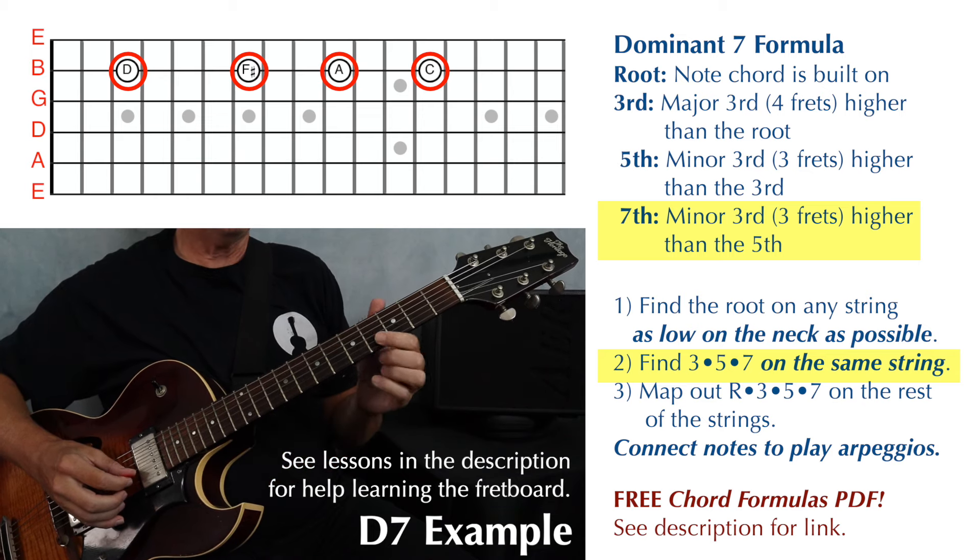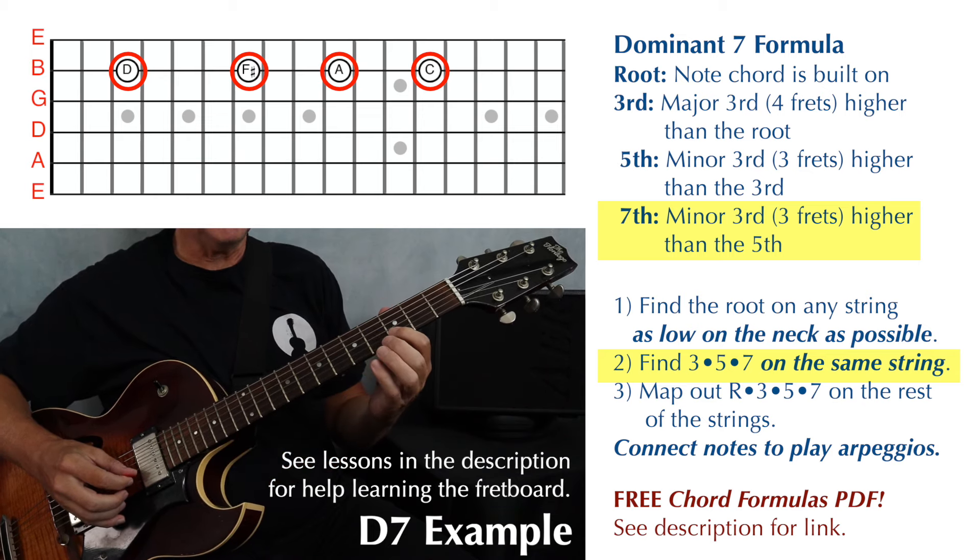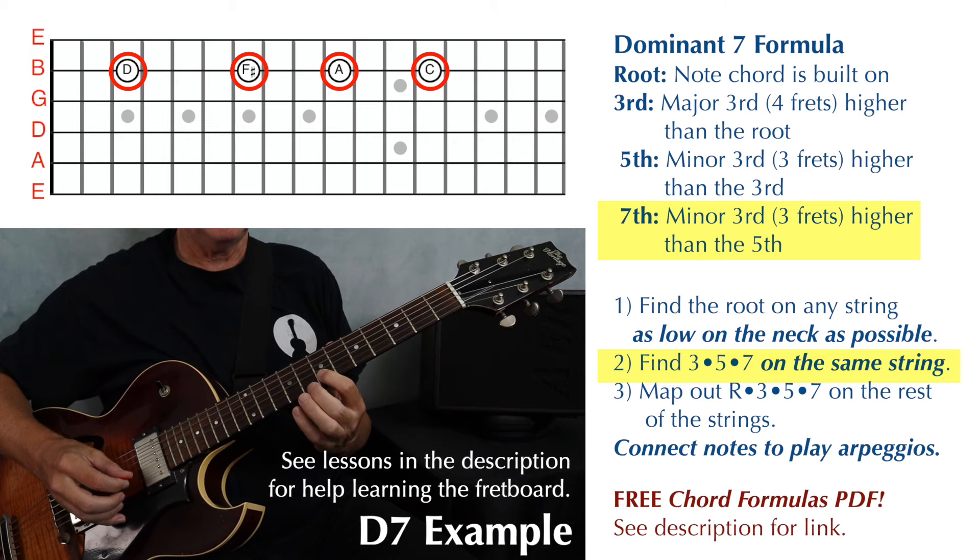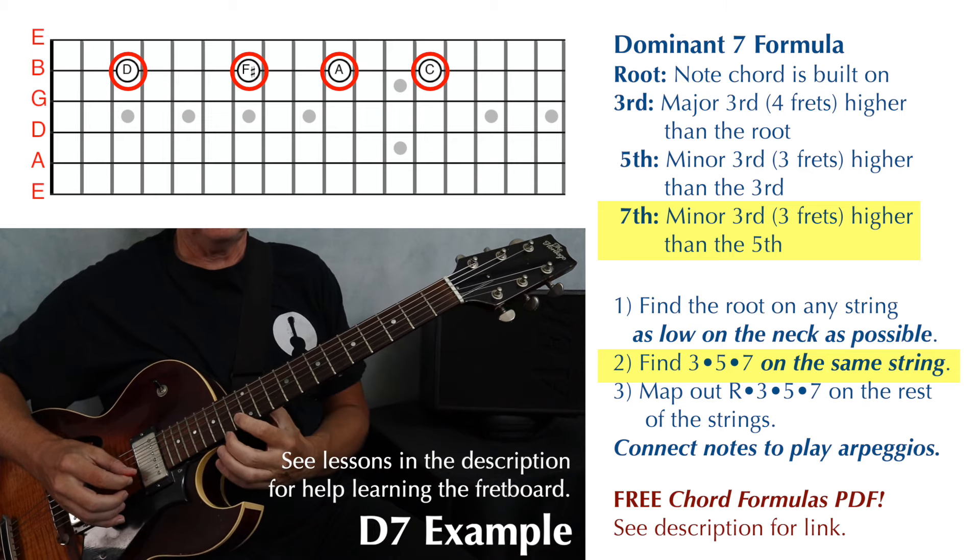So the root, third, fifth, and seventh of a D7 are D, F sharp, A, C.